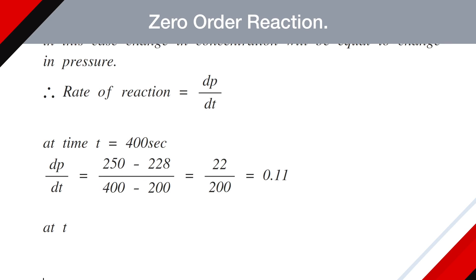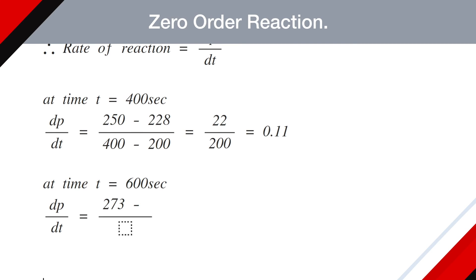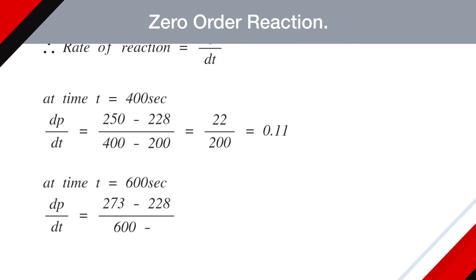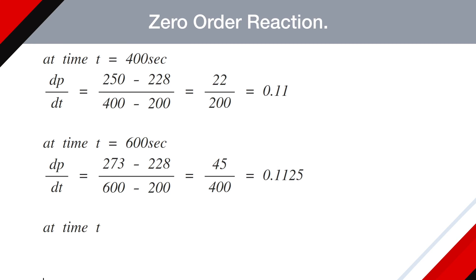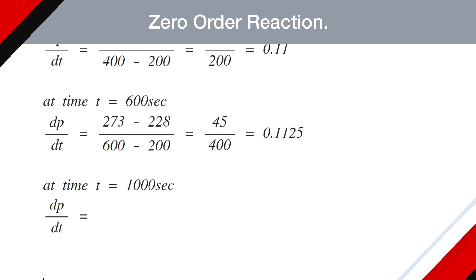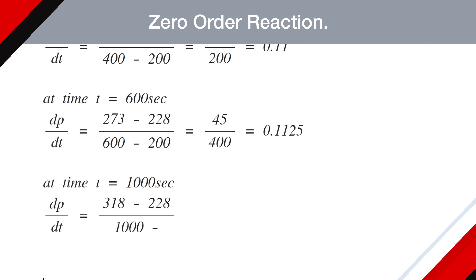Similarly, at time t equals 600 seconds, dp/dt becomes 273 minus 228 divided by 600 minus 200, which is 45 divided by 400. Also, at time t equals 1000 seconds, dp/dt becomes 318 minus 228 divided by 1000 minus 200, which is 90 by 800 and it finally comes 0.1125.